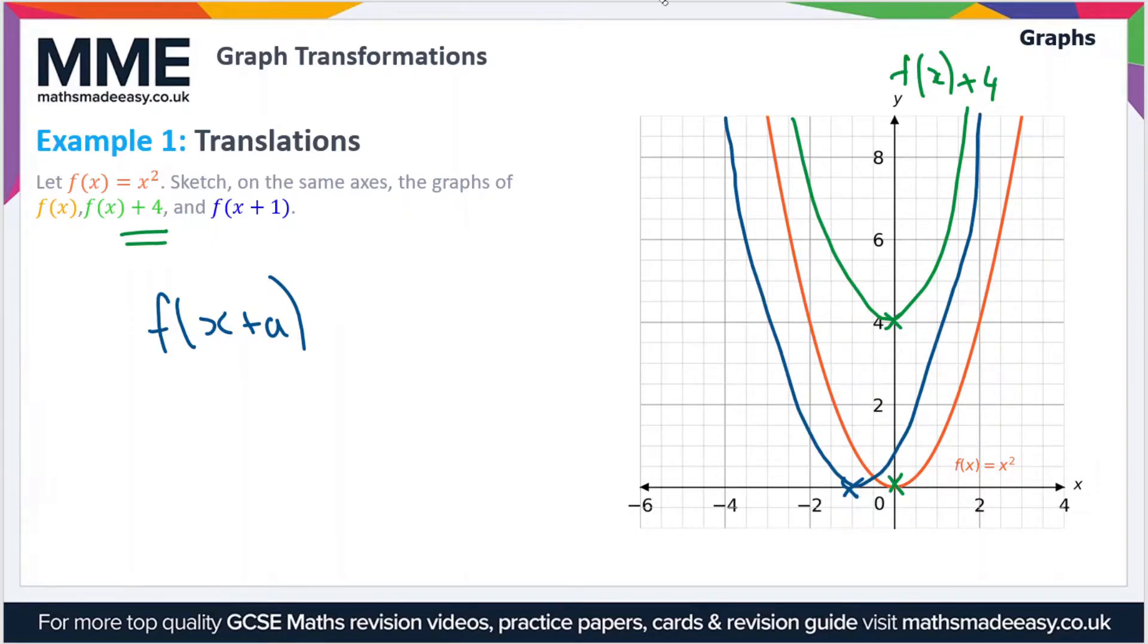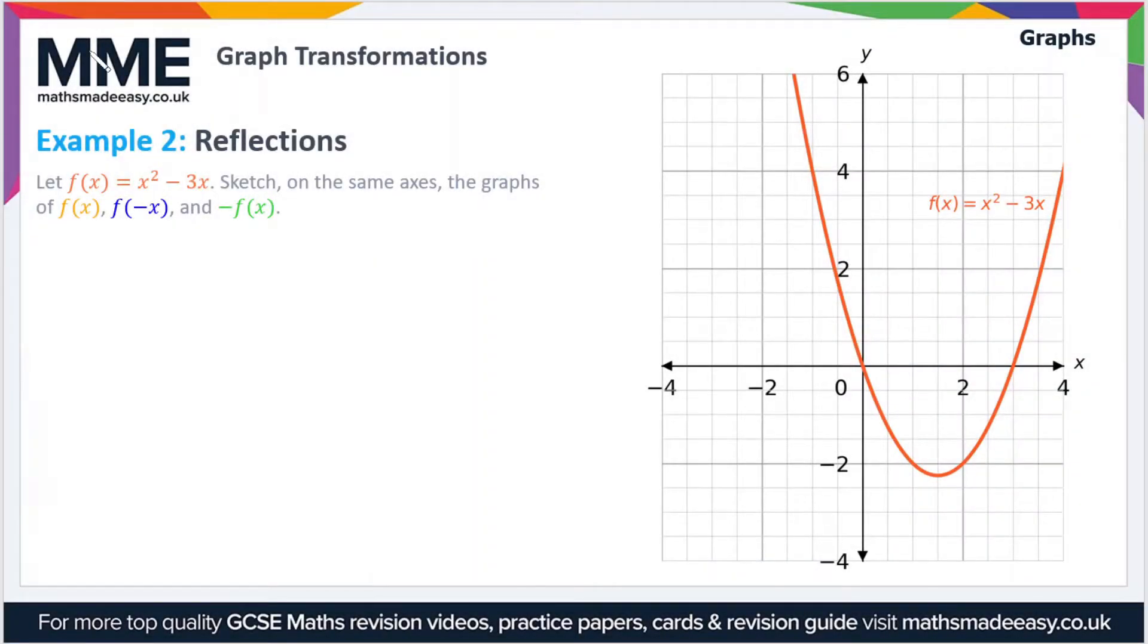Let's label that as f(x+1). Moving on to Example 2, we have reflections this time. Let f(x) = x² - 3x. Sketch on the same axis the graphs of f(x), f(-x), and -f(x). As you can see, we've got the graph of f(x) already, so that's very nice.